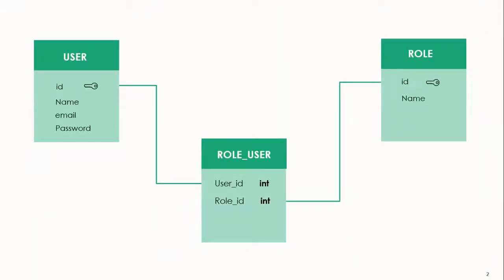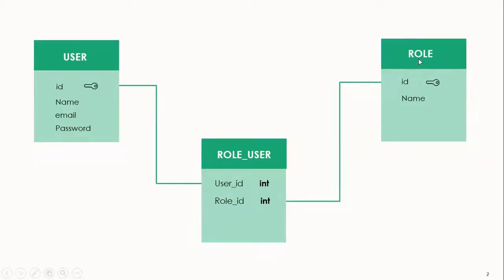The first table is the users table. We have the role_user pivot table and the roles table. The users table, obviously, we store the names of the users. The role_user table will store the user ID from the users table and the role ID from the roles table. This role_user is a pivot table — a pivot table is like an agent or mediator table which manages the many-to-many relationship between two tables. And finally, the roles table will store the names of the roles.